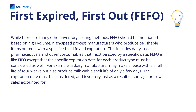First Expired, First Out, or FEFO, should be mentioned for high-volume, high-speed process manufacturers who produce perishable items or items with a specific shelf life and expiration. This includes dairy, meat, pharmaceuticals, and other consumables that must be used by a specific date. FEFO is like FIFO except that the specific expiration date for each product type must also be considered. For example, a dairy manufacturer may make cheese with a shelf life of four weeks but also produce milk with a shelf life of only a few days. The expiration date must be considered and inventory lost as a result of spoilage or slow sales accounted for.